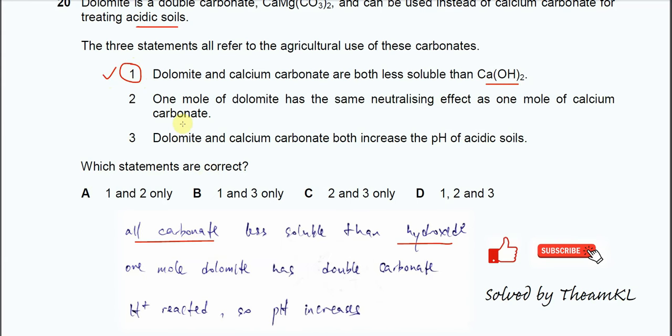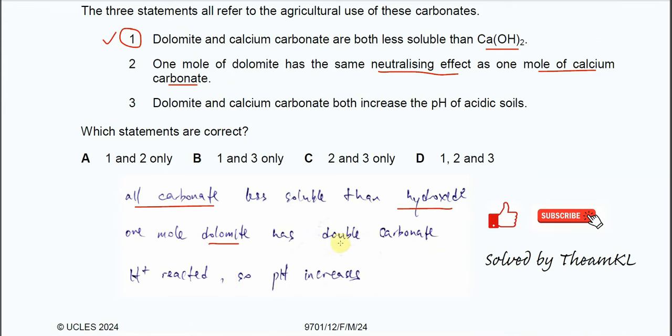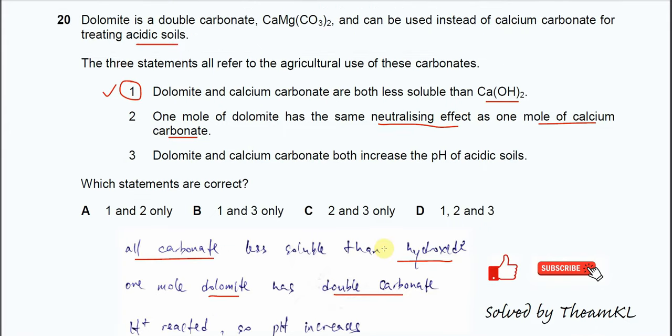Statement 2: one mole of dolomite has the same neutralization effect as one mole of calcium carbonate. This is not really true because one mole of dolomite actually has double carbonate. The neutralization or neutralizing effects are different. Because it has more carbonate—I mean the dolomite—it has a better neutralizing effect. So the second statement is wrong.